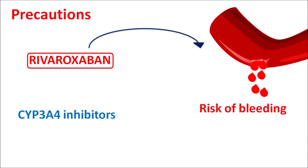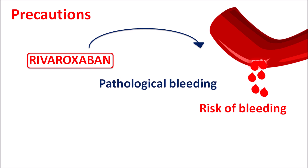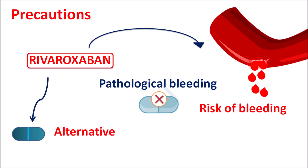Similarly, CYP3A4 inhibitors like ketoconazole and ritonavir can inhibit the metabolism of rivaroxaban, which increases the levels of this drug, thereby increasing the risk of bleeding. So CYP3A4 inhibitors should not be combined with rivaroxaban. Since the risk of bleeding is more pronounced with anticoagulants, the patient should be closely monitored. In case of pathological bleeding, the drug should be withdrawn, and in normal cases rivaroxaban may be replaced with an alternative agent to reduce the risk of bleeding.